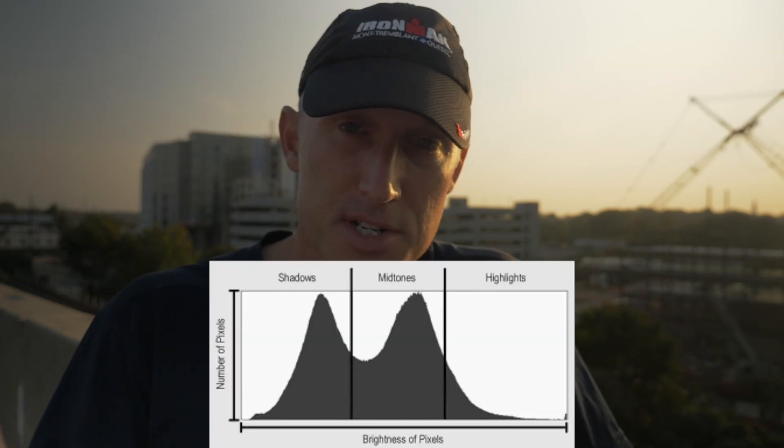Welcome back guys and thanks for stopping by. Understanding the histogram is a simple way to instantly improve all of your videos and all of your photos. So what is the histogram and how do I use it? The histogram is nothing more than a representation of the overall exposure coming out of your camera. Simply put, it keeps things from being too light or too dark. The left side represents the shadows and the blacks, and the right side represents the highlights and the whites. And the middle area represents the midtones.